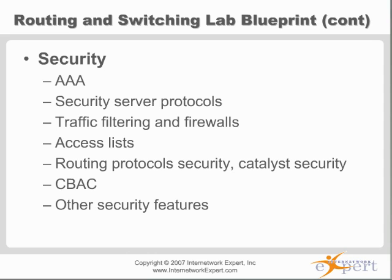For security — once again, one of the biggest problems you can run into is that it's a non-core topic, but it can break your core network. You've got to be careful that you don't put on some sort of layer 2 security config that breaks your OSPF config or your OSPF neighborship. The same thing with features like root guard or BPDU guard — be careful you don't break your network. With port security on the switches, make sure you don't implement a config that's not supported, or implement a feature later on that breaks what you configured earlier.